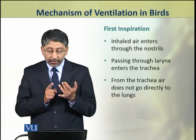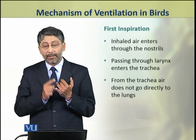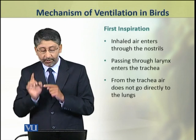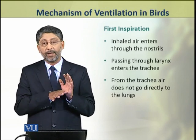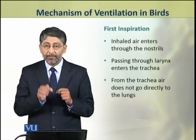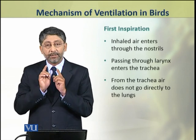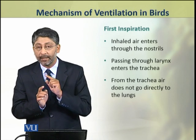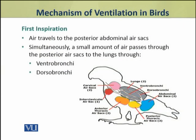During the first inspiration, the inhaled air enters through the nostrils and passing through the larynx, it enters the trachea. From the trachea, air does not directly enter the lungs. Air rather travels to the posterior abdominal air sacs. Simultaneously, a small amount of air passes through the posterior air sac to the lungs through the ventrobronchi and dorsal bronchi.